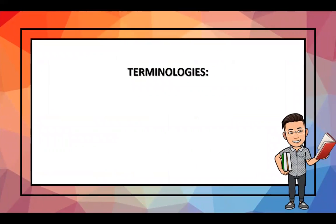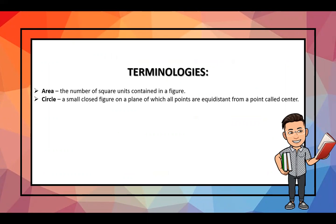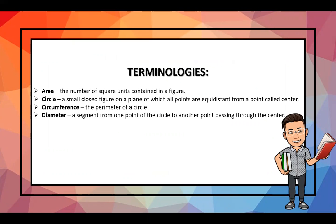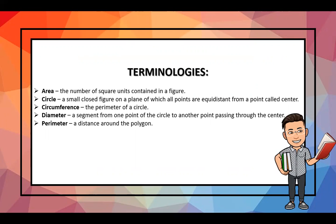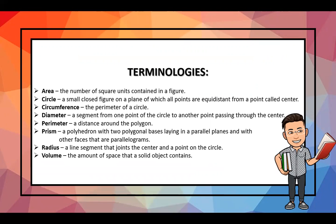In this topic you will meet different terminologies that are new to you. Area means the number of square units contained in a figure. A circle is a closed figure on a plane where all points are equidistant from a point called the center. Circumference is the perimeter of a circle. Diameter is a segment from one point of the circle to another passing through the center. Perimeter is the distance around the polygon. A prism is a polyhedron with two polygonal bases lying in parallel planes with other faces that are parallelograms. Radius is a line segment joining the center and a point on the circle. Volume is the amount of space that a solid object contains.